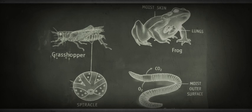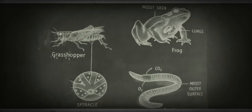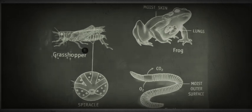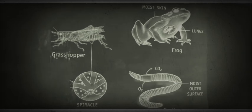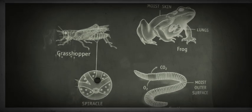In insects such as grasshopper, as you can see, spiracles are here. Here it is, you can see, this is spiracles.